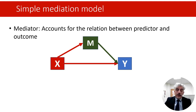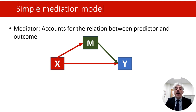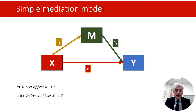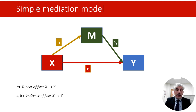So the predictor X influences the mediator M, and the mediator also influences Y, the outcome. So X can influence the outcome Y directly, but can also influence Y indirectly by influencing M, which in turn exerts an effect on Y. In many applications, these pathways take the names A, B, and C. C is the direct effect from predictor X to outcome Y. But X can also influence Y through an indirect pathway: one that involves A — the effect of X on M — and one that involves B — the effect of M on Y.